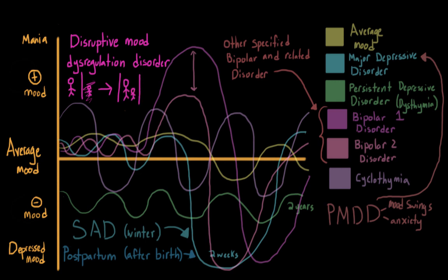Disruptive mood dysregulation disorder covers what used to be thought of as childhood bipolar disorder. It can be used as a diagnosis for kids who are under 18 who show bipolar symptoms. They might show persistent irritability or frequent episodes of out-of-control behavior.